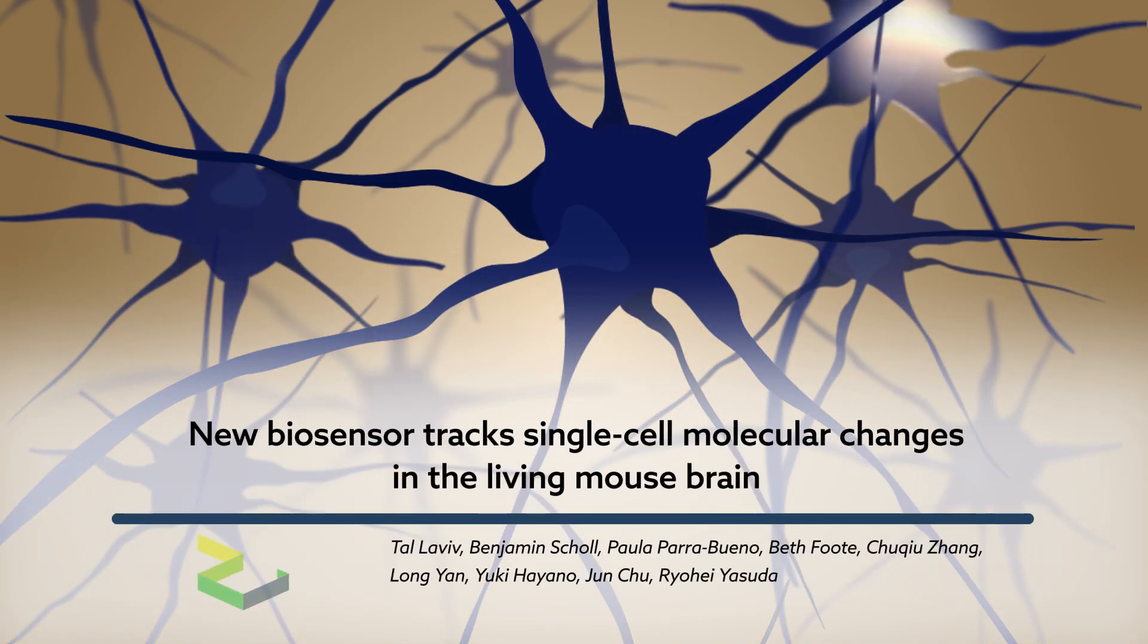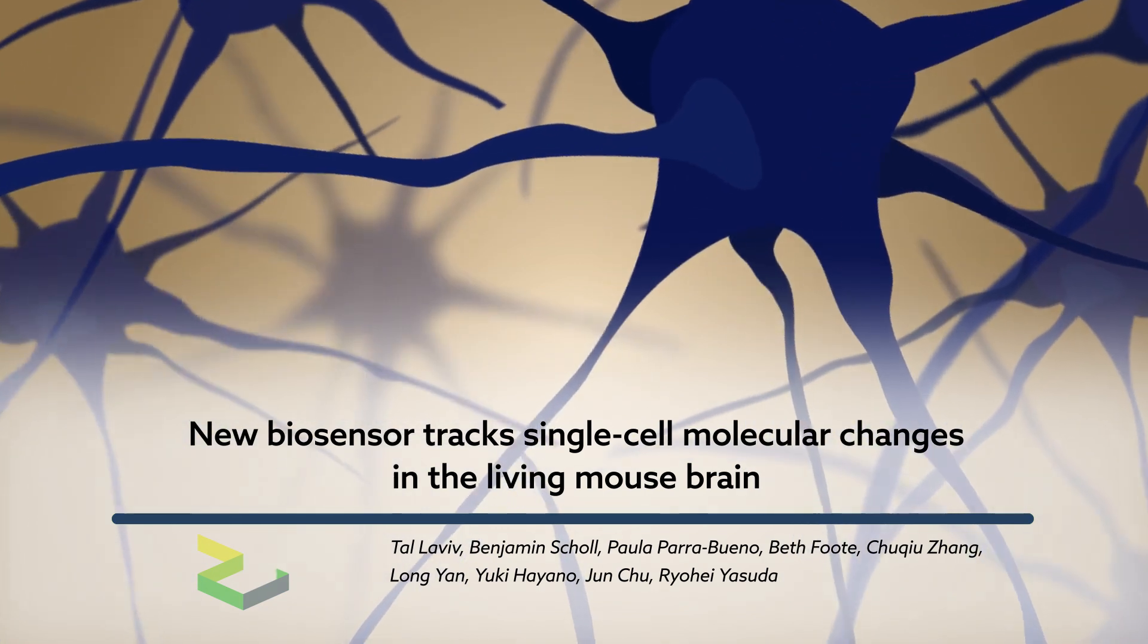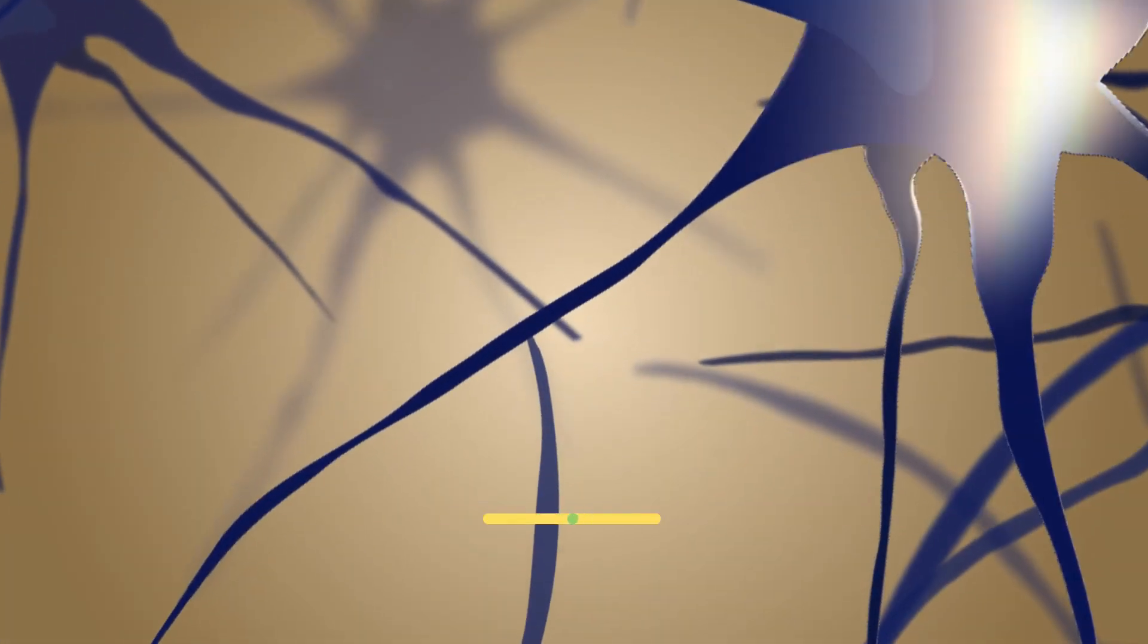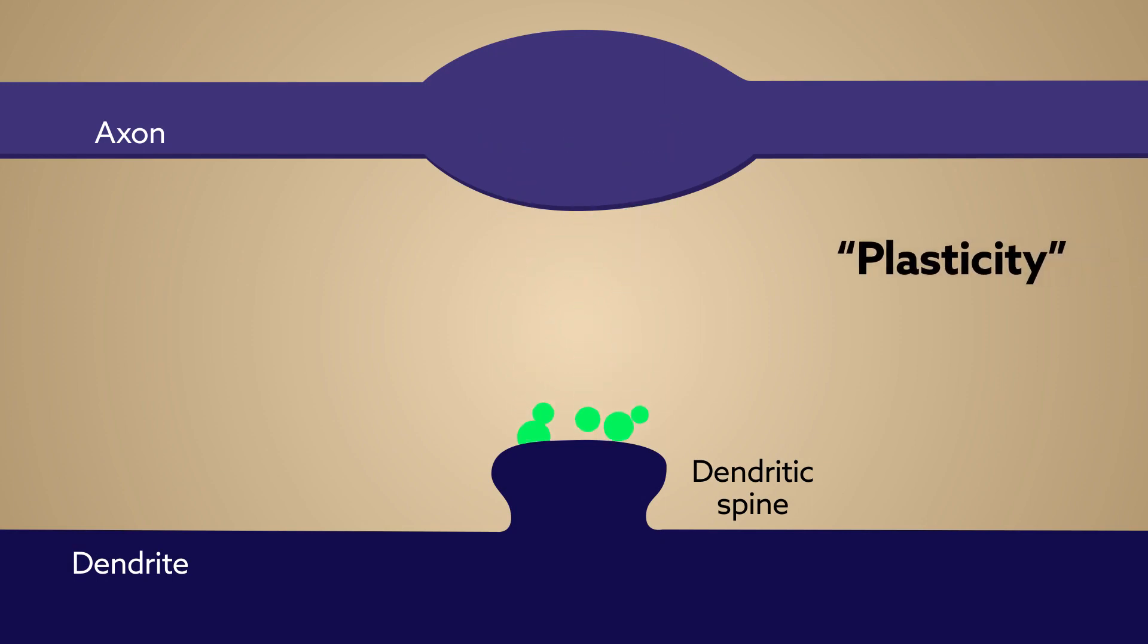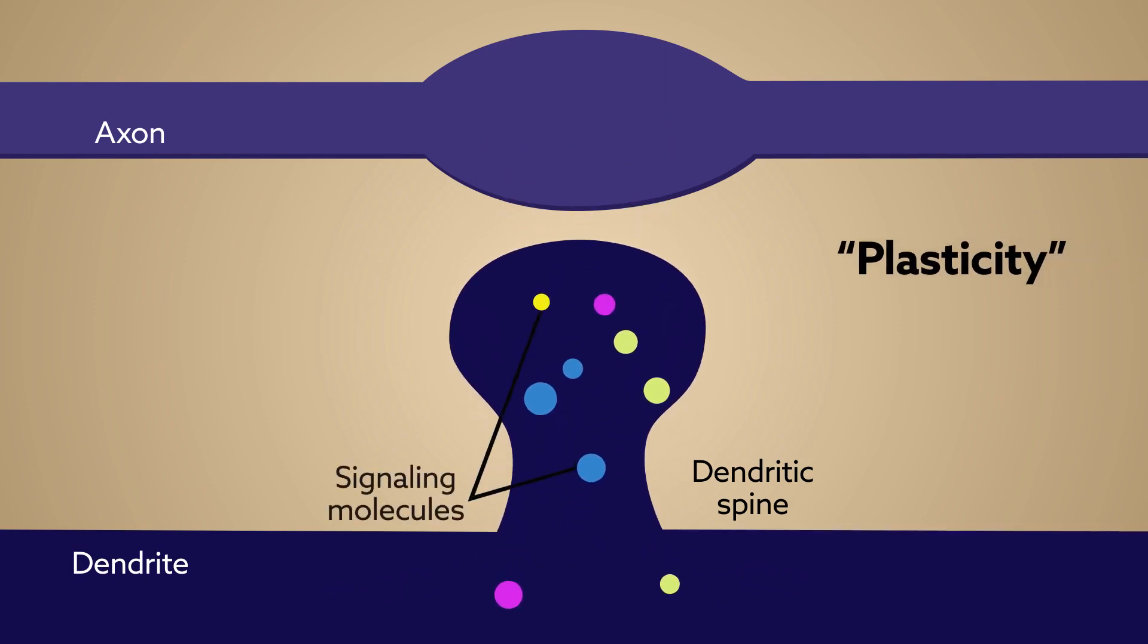Learning a new skill is literally brain-altering. Neuronal circuits in the brain are rewired as we struggle to pull off something we've never done before. This so-called plasticity, which makes learning and memory possible, is regulated by a vast array of signaling molecules.